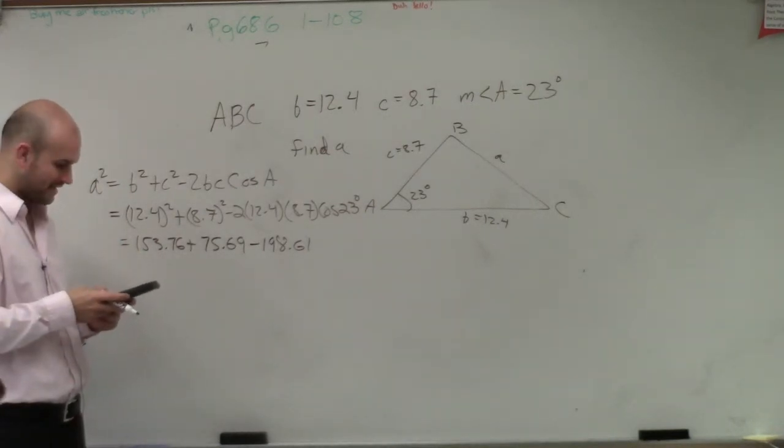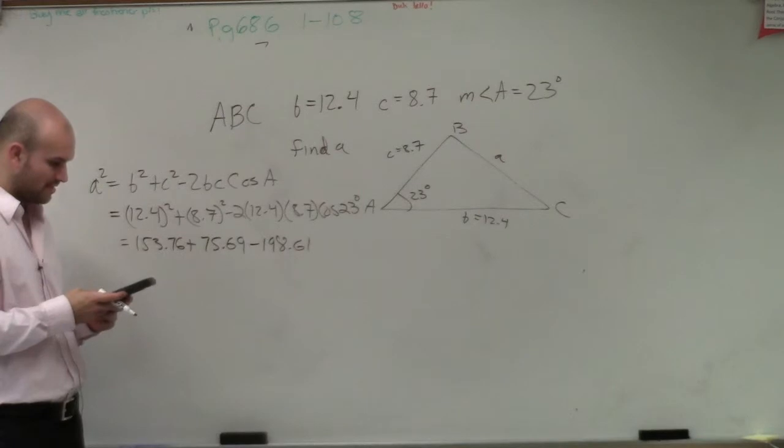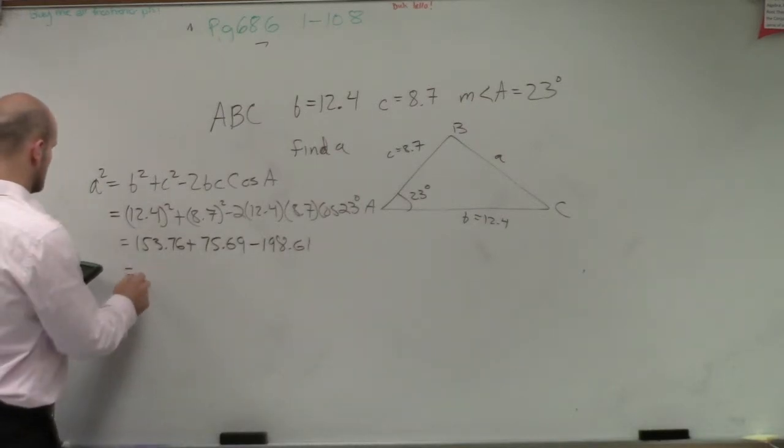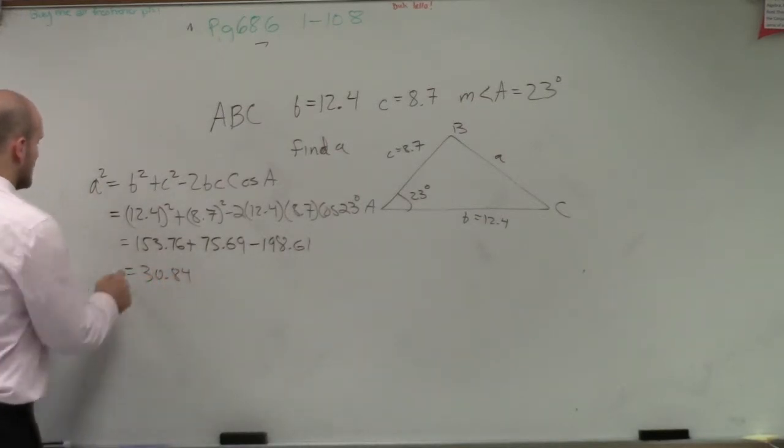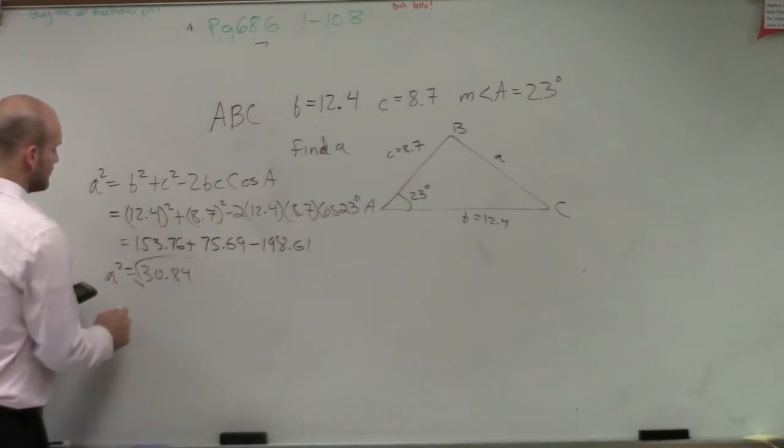So therefore, I have 153.76 plus 75.69 minus 198.61. That equals 30.84. And then remember that equals a squared, so I take the square root.